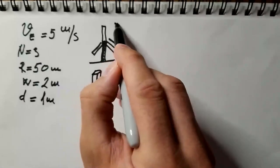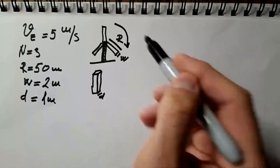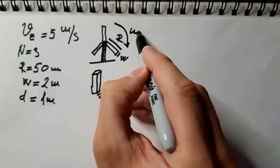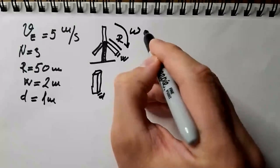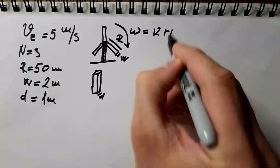And lastly, we said this wind turbine is rotating, let's say in this direction, it doesn't really matter, and the rotational velocity is omega.